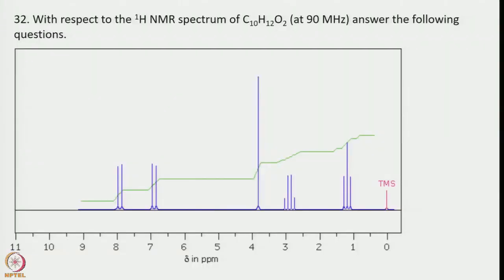Now let us look into another example: with respect to the 1H NMR spectrum of C10H12O2, answer the following questions. Looking carefully at the spectrum, we have 5 signals apart from TMS. TMS is the reference at 0 ppm. So there are 5 signals present.